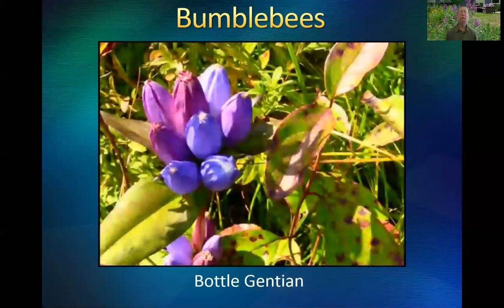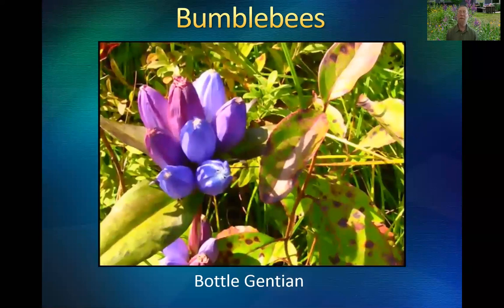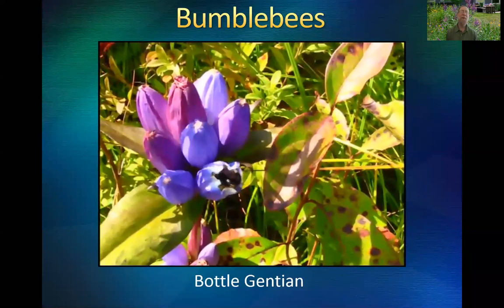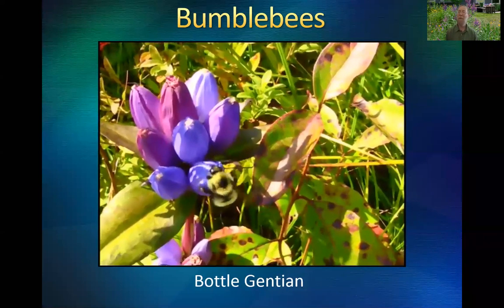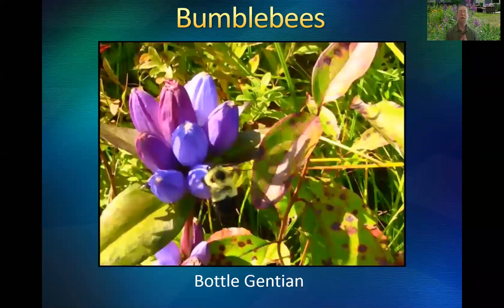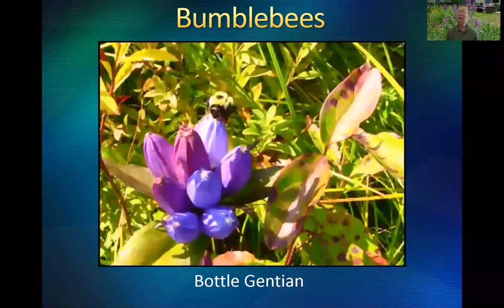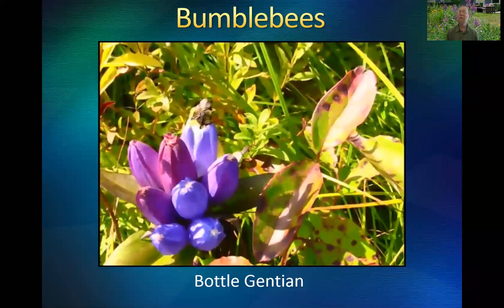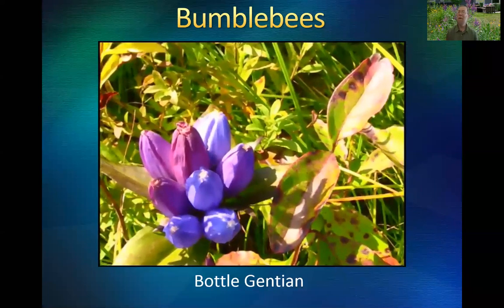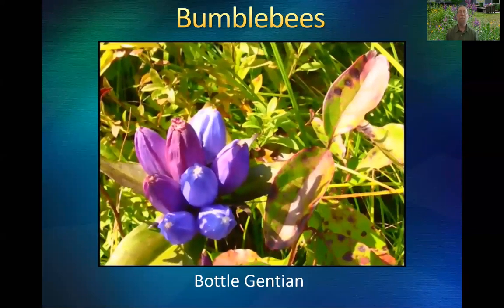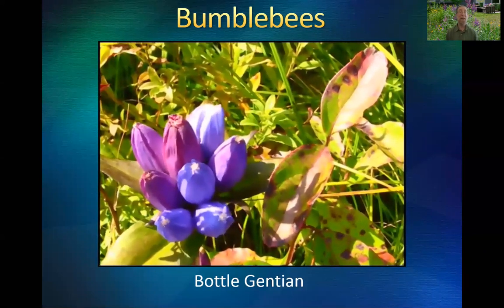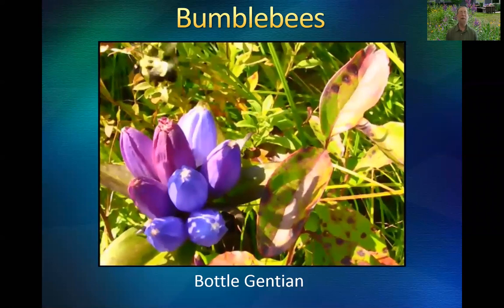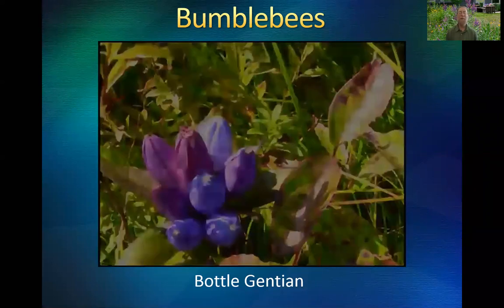The one that really shines for bumblebees is bottle gentian — a flower that doesn't open. It stays closed like a folded umbrella, and it takes a fairly strong bee to force its way in. Bumblebees can do that. So if you ever notice a bottle gentian that's moving or buzzing, sit down, take a look, and you might see a bumblebee coming out.